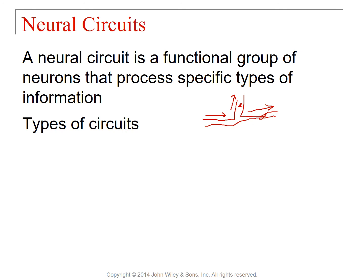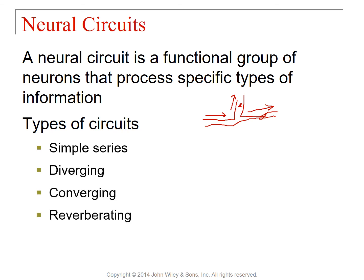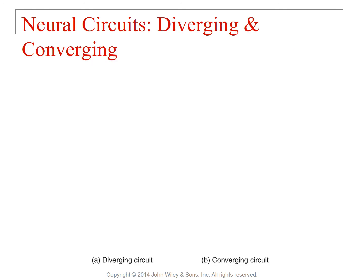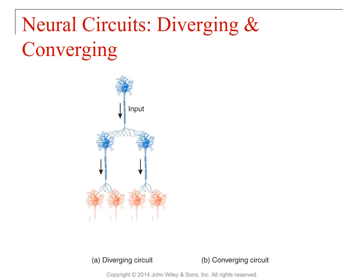There are simple series, diverging, converging, reverberating, and parallel after-discharge circuits. A simple series is just one neuron leading into another single neuron. A diverging circuit has one neuron sending signal to two neurons, which sends signal to four neurons — so you've diverged the circuit, and because there's no weakening of signal, you have basically four times the signal at the output as at the input.